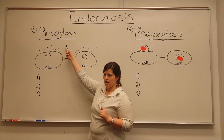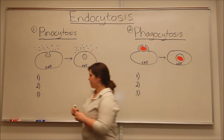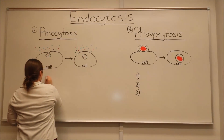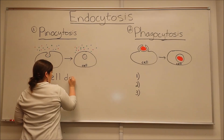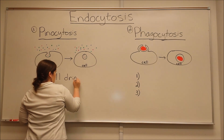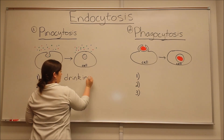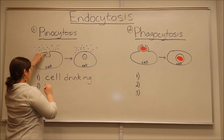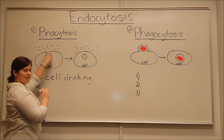Pinocytosis — you can think of this as a process of cell drinking. Basically, this is where the cell uses a structure that you see here. This is called an invagination.